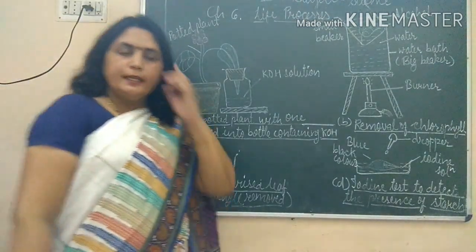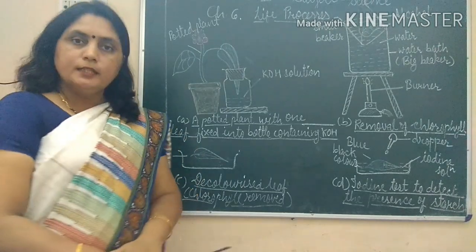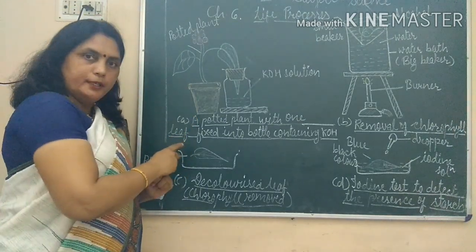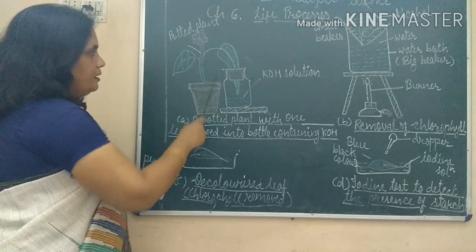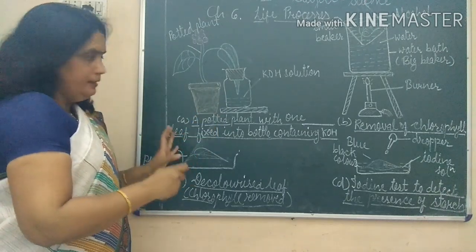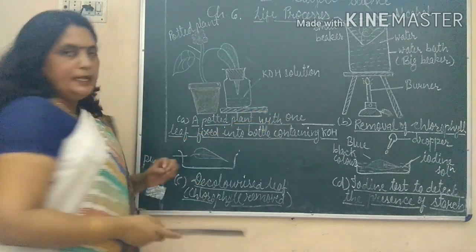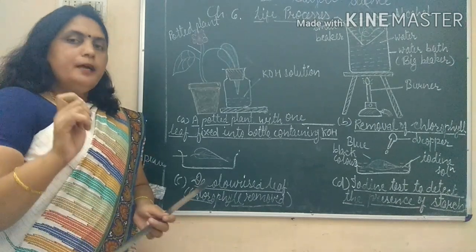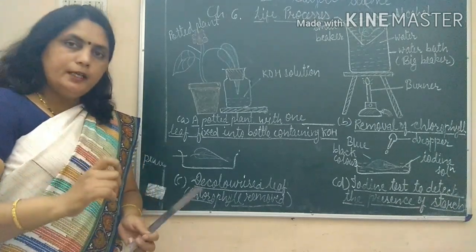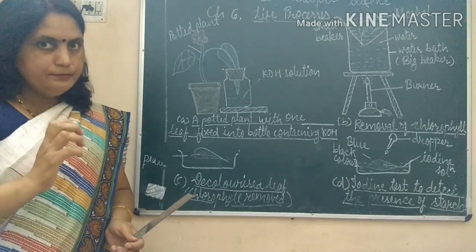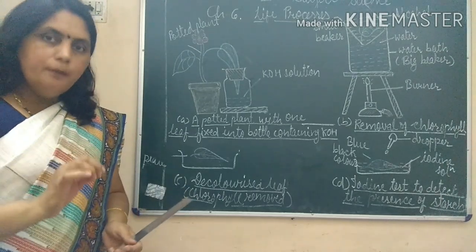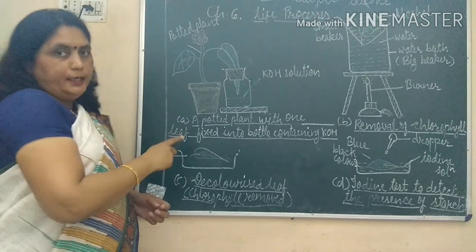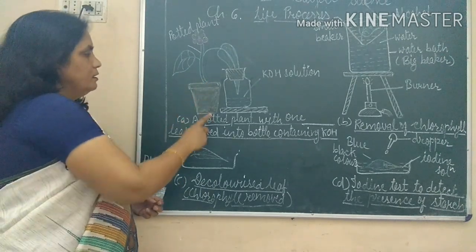Now the second experiment is to prove that carbon dioxide is essential for photosynthesis. We take a potted plant and a wide-mouth bottle containing KOH solution, that is potassium hydroxide solution. The potassium hydroxide solution has the property of absorbing carbon dioxide gas present in air.